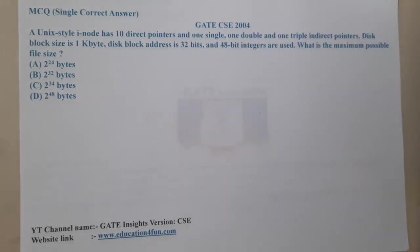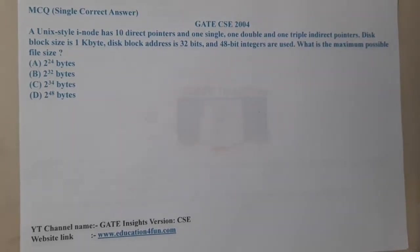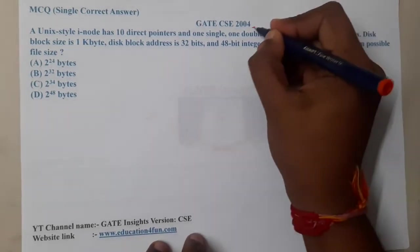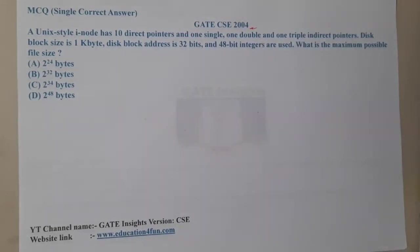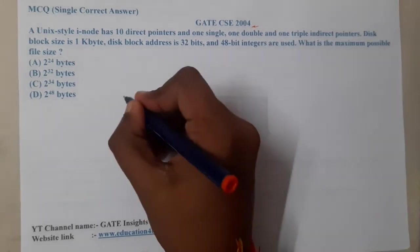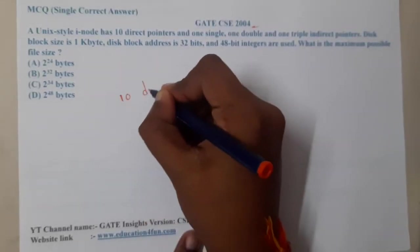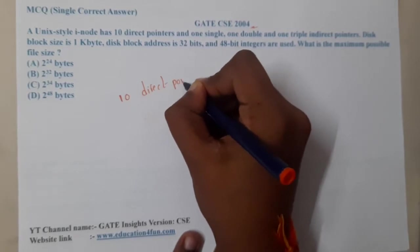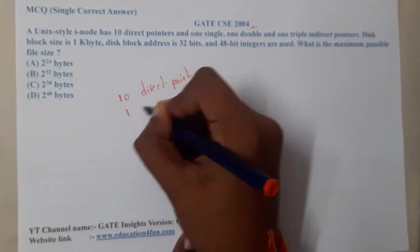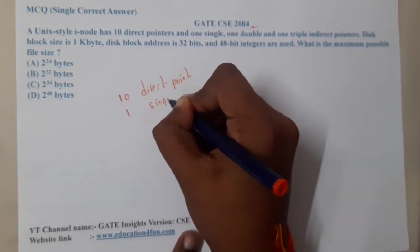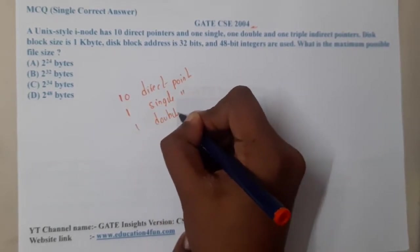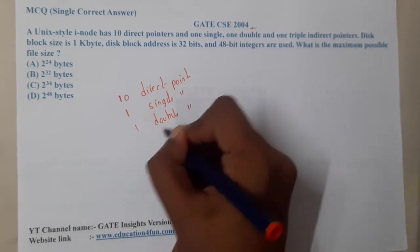Hello guys, we are back with our next lecture. This question belongs to GATE CSC 2004. The given question is: a Unix-style inode has 10 direct pointers, one single indirect pointer, one double indirect pointer.